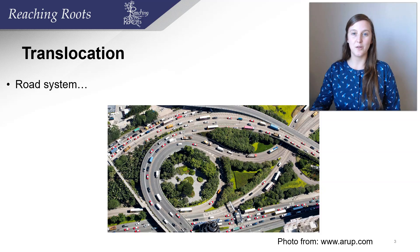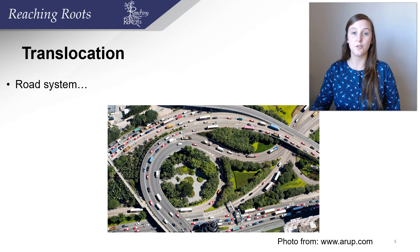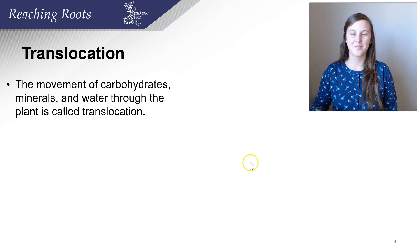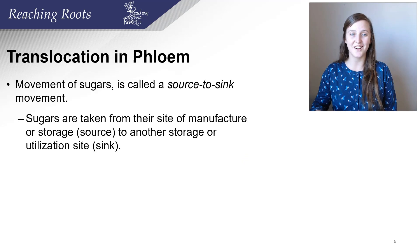Translocation systems can be thought of as the highway system for the plant. The highway system that the plant uses to transport sugar is called phloem. Translocation is the movement of carbohydrates, minerals, and water throughout the plant. Without translocation, plants couldn't grow or get taller.